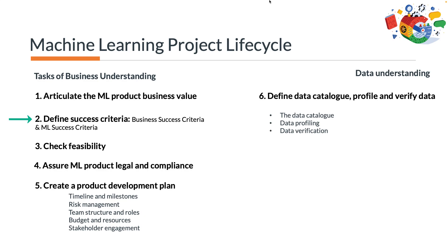The second task is defining success criteria. Success criteria can be business success criteria and machine learning success criteria. According to the IEEE standard for software development lifecycle (SDLC) processes, measurability is one of the essential principles, and each success criterion must be defined in alignment with the other and the overall system requirements to prevent contradictory objectives. Therefore, we measure the success criteria of a machine learning product or project on two levels: the business success criteria and the machine learning success criteria. Usually, multiple machine learning criteria are associated with one business success criterion.